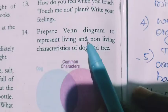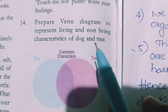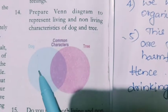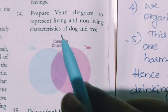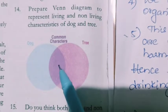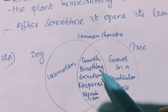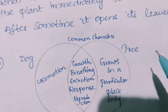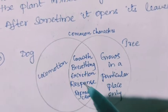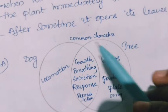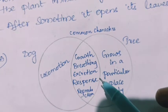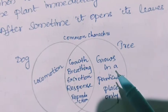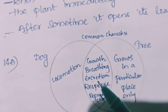Fourteenth question: prepare a Venn diagram to represent the living and non-living characteristics of dog and tree. We write the characteristics shown by the dog and tree, and the common characters of both in the overlapping area. Dog locomotion — it moves from one place to another — but a tree grows in a particular place only. Dog and tree both show common characters: growth, breathing, excretion, response to touch, light and heat, and reproduction. The only difference is that a dog moves and a tree does not.